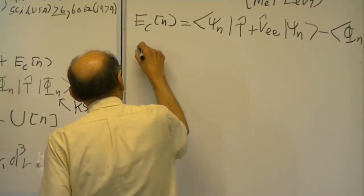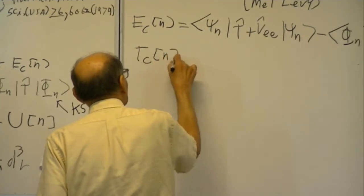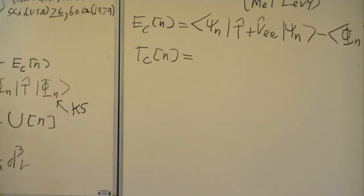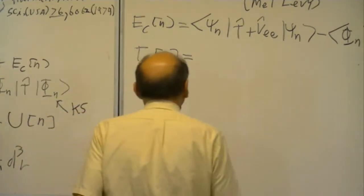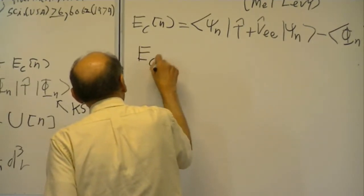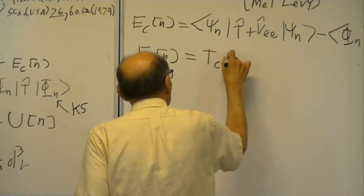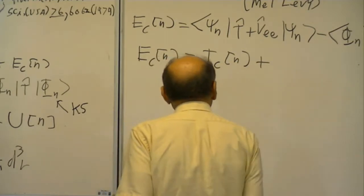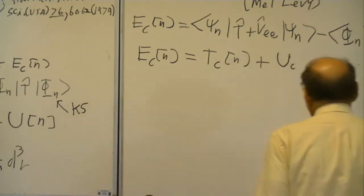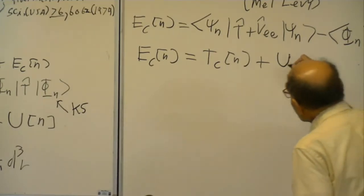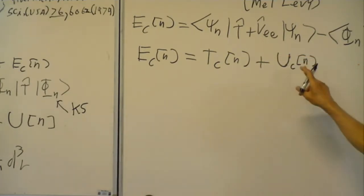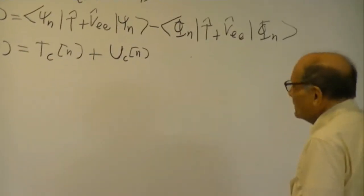We need the kinetic contribution to the correlation energy. We'll write it this way: Ec[n] equals Tc[n] plus Uc[n]. I'll call it Uc—that's what Karen called it. So make it a U: Uc[n]. So what is Tc[n]?